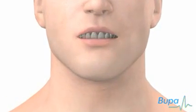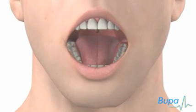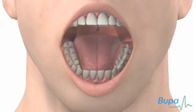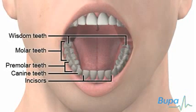Here we show the position of the wisdom teeth. Wisdom teeth are located at the back of your mouth and develop after all the other teeth.